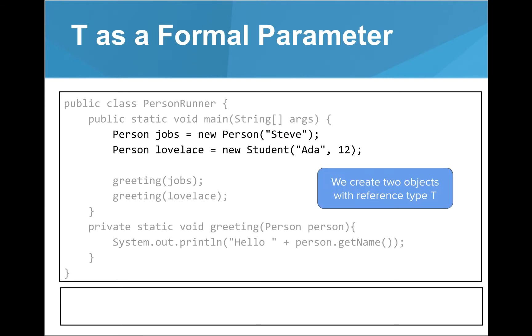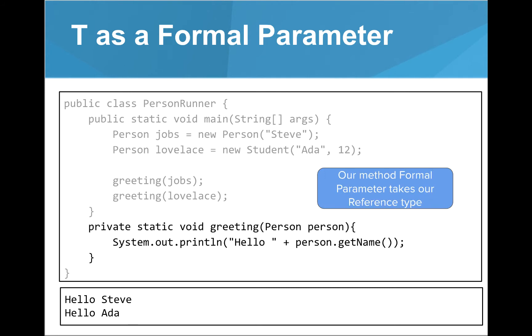In this example, we're going to look at how we can use the superclass or type T as a formal parameter. We start by creating two objects. Notice that both our objects use the reference type of a person, but one object is created as a person and the other is a student. We then use a static method that takes a person as an input and we can call a method from the person class to print out both the jobs person object and the lovelace student object.